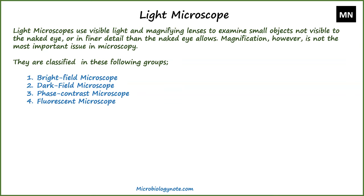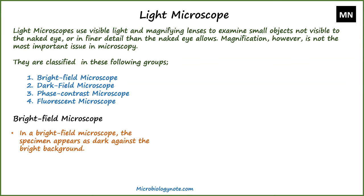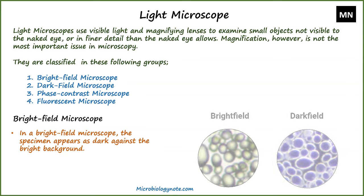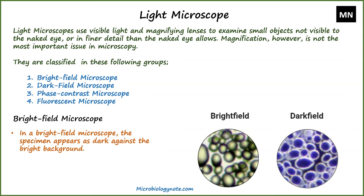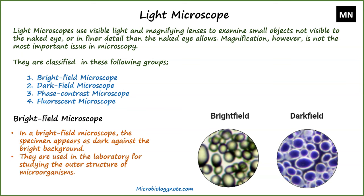The first light microscope is the bright field microscope. In a bright field microscope, the specimen appears dark against a bright background. These types of microscopes are used in the laboratory for studying the outer structure of microorganisms.